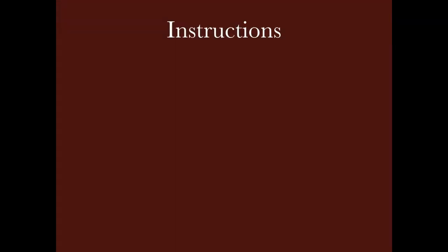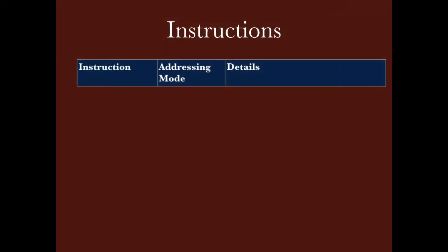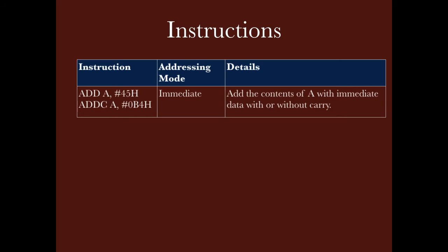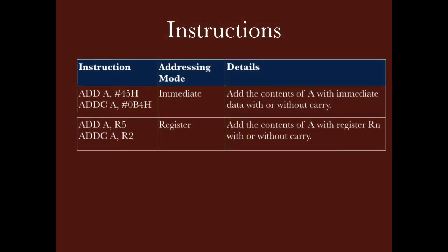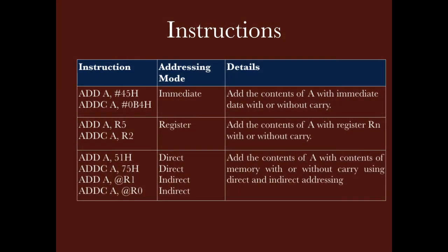This slide lists the instructions used for addition operation. In all these instructions, one operand is in the accumulator and the second operand to be added can be taken directly using immediate addressing, or it can be accessed from a register, or taken directly from memory using direct and indirect addressing. The result of the addition operation is stored in the accumulator. The ADDC instruction is used to add carry with the operand — so ADD is without carry and ADDC is with-carry addition.